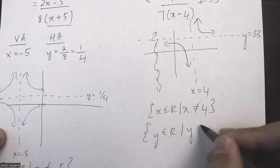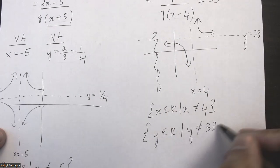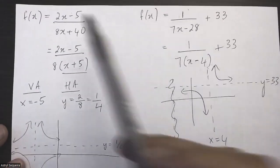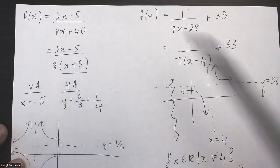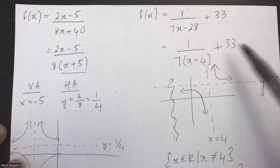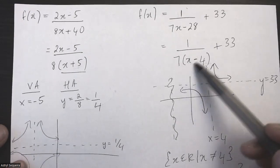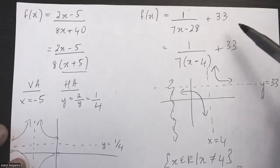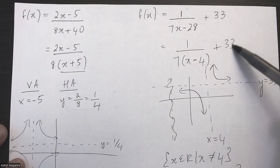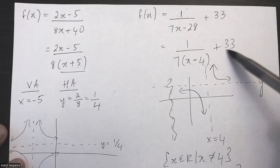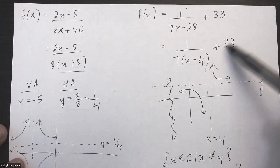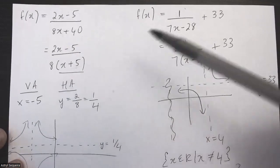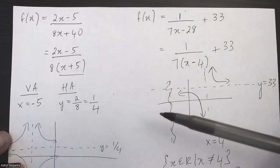The range does not equal 33. The main thing is don't mix up reciprocal and rational functions. For reciprocal functions, the denominator gives your vertical asymptote and the c value is your horizontal asymptote, whereas rational functions have a couple of different rules depending on the type of question.